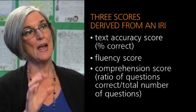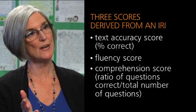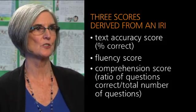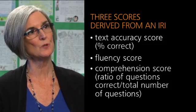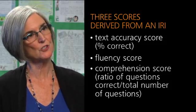We recommend writing how many questions were correct over the total number of questions. So a student might have gotten five correct out of a total of eight. Their score would be five out of eight comprehension questions.